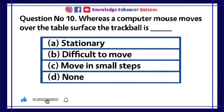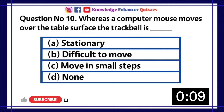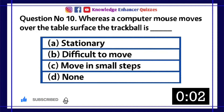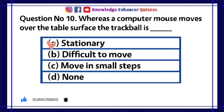Question number 10. Whereas a computer mouse moves over the table surface, the track ball is dash. A. Stationary. B. Difficult to move. C. Move in small steps. D. None. Option A is the right answer.